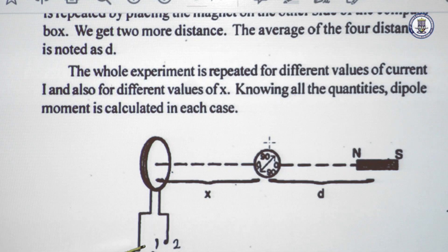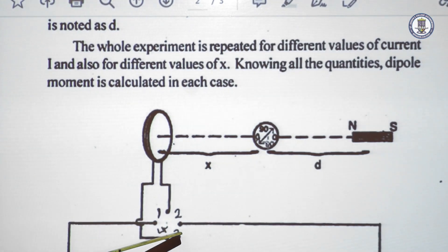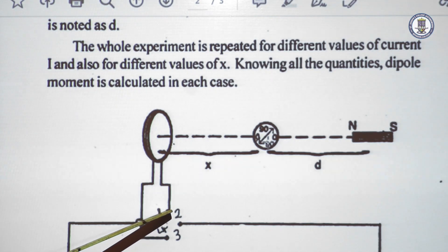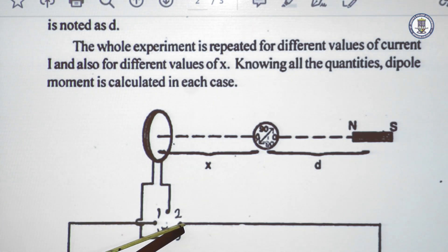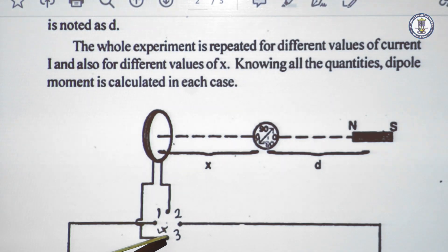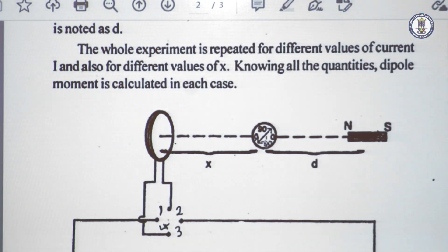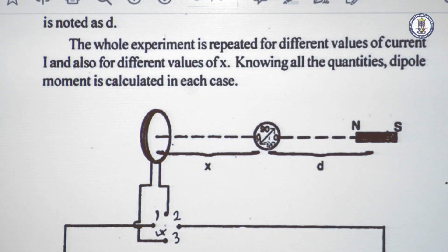We can repeat the experiment for the same x by interchanging the commutator position. Initially with key one and three, current flows through the coil in the anticlockwise direction. When the commutator is reversed — plugging key four and two — the current flows in the clockwise direction, reversing the field direction. In that case, we also reverse the magnet and obtain another value of d.